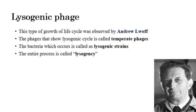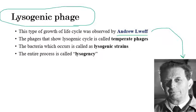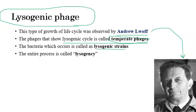The second type is the lysogenic phase. This type of life cycle was discovered by André Lwoff, a Nobel laureate who worked at the Pasteur Research Institute for many years. The phage that shows this lysogenic cycle is called a temperate phage. The bacteria which occur in this lysogenic phase are called lysogenic strains, and the entire process is called lysogeny.